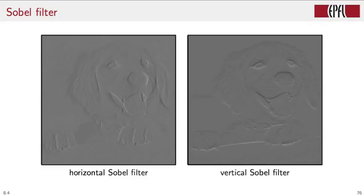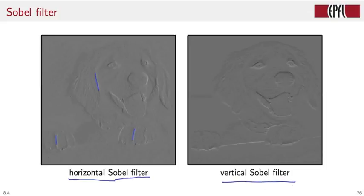Applying the Sobel filter to our image, we can see that, as expected from a differentiation operator, the uniform areas are cancelled out and the points of discontinuity such as edges are enhanced. The horizontal Sobel filter approximates the derivative in the horizontal direction and is therefore particularly sensitive to vertical lines — you can see vertical lines are enhanced. Conversely, the vertical Sobel filter differentiates in the vertical direction and therefore enhances horizontal lines.